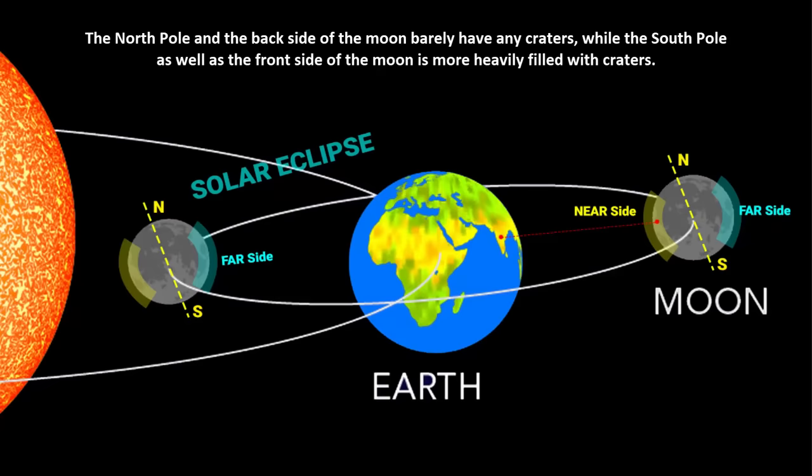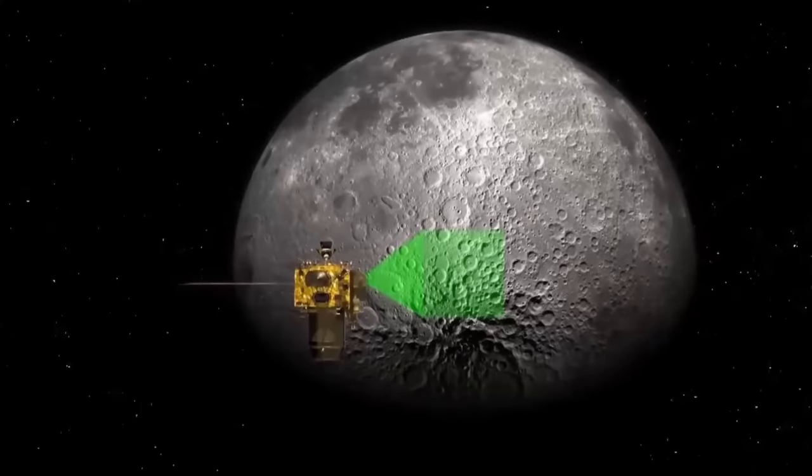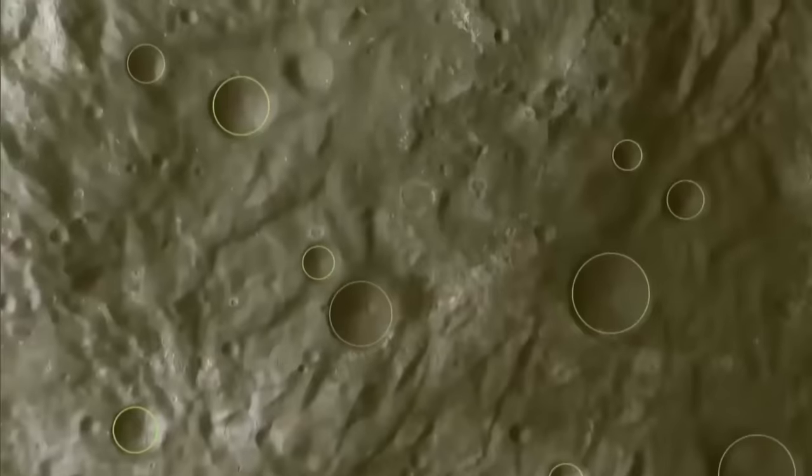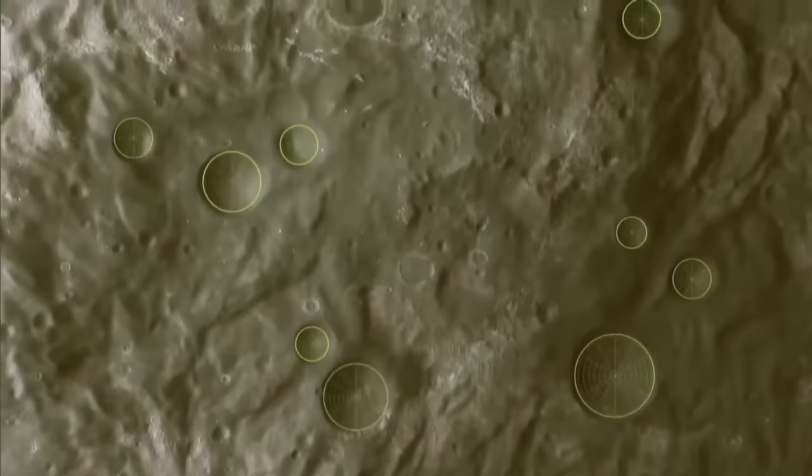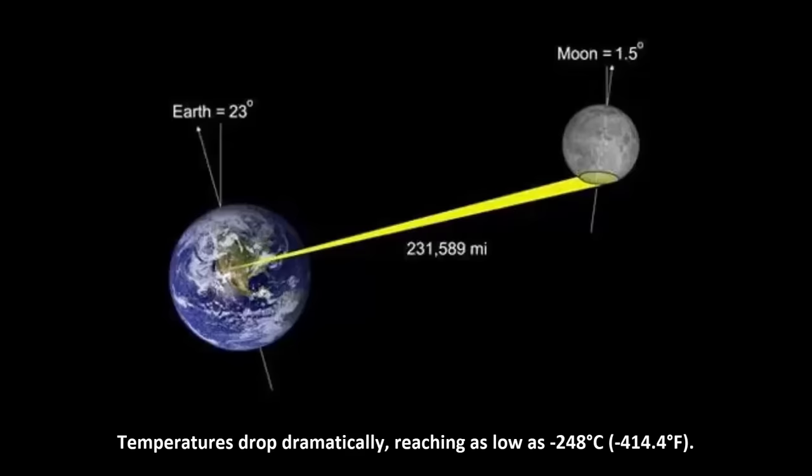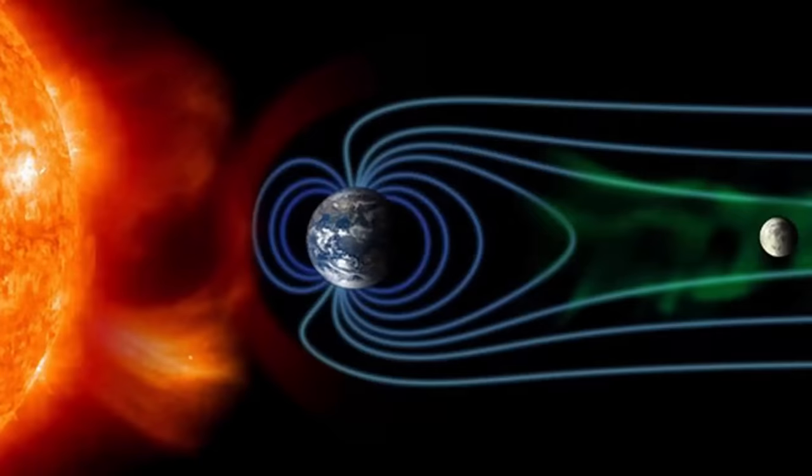The North Pole and the backside of the Moon barely have any craters, while the South Pole as well as the front side of the Moon is more heavily filled with craters. These deep craters are on the Southern Pole of the Moon, where sunlight has never reached for billions of years. In these regions, temperatures drop dramatically, reaching as low as minus 248 degrees Celsius. There is also no atmosphere here to heat the Moon's surface.